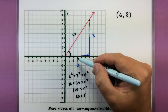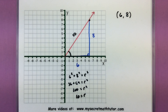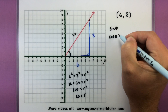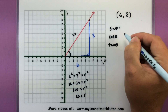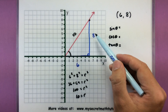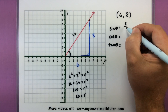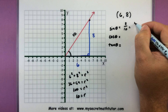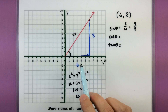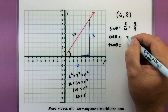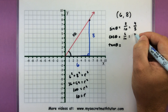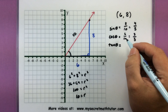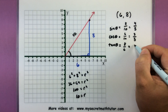Our reference angle is in reference to the x-axis, so we'll use that in our trigonometric functions. Starting with the first big three — sine, cosine, and tangent. For sine, we want opposite over hypotenuse, so we get eight-tenths, which reduces to four-fifths by dividing top and bottom by two. For cosine, we take the adjacent side divided by the hypotenuse: six divided by ten, which reduces to three-fifths. And tangent is opposite over adjacent: eight-sixths, which reduces to four-thirds.